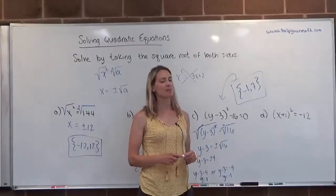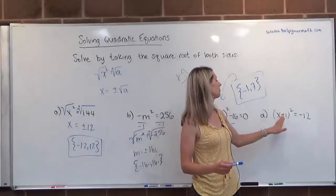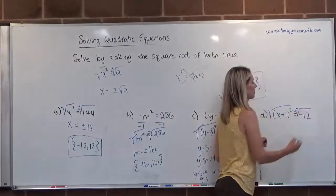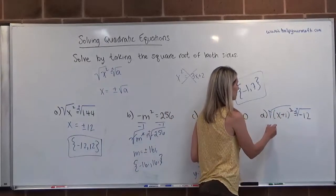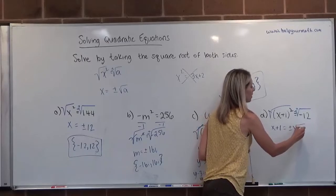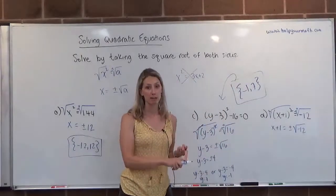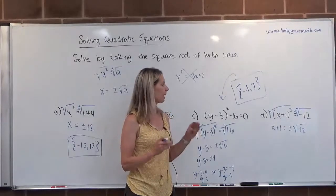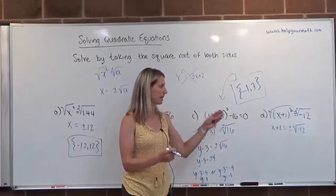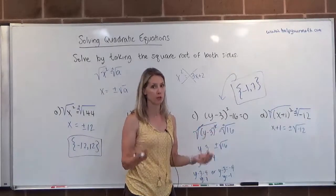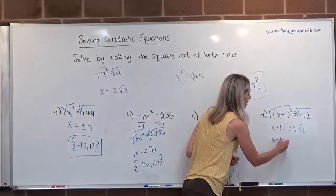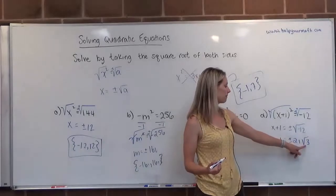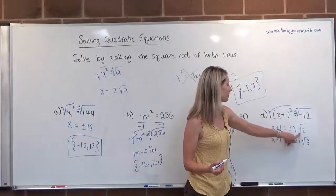For letter d, we're looking at (x plus 1) quantity squared equals negative 12. This is a perfect setup because we already have the square isolated on one side. So we take the square root of both sides, and we don't forget to include the positive or negative on the numerical side. The square and square root cancel, giving x plus 1 equals plus or minus the square root of negative 12. Since the radicand is negative, this will be an imaginary root. And since 12 is not a perfect square, we simplify: pulling out the i makes the radicand positive, and 12 equals 4 times 3 where the square root of 4 is 2. So x plus 1 equals plus or minus 2i radical 3.